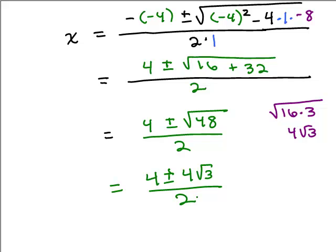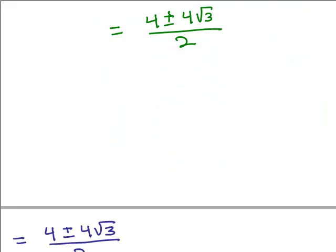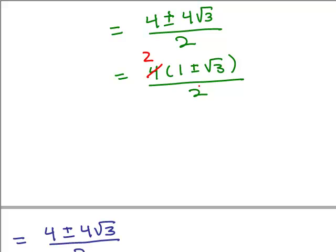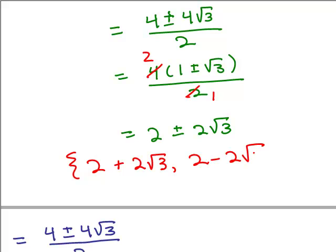Our next step is to simplify this fraction. To simplify fractions, you factor and cancel. Looking at the numerator, I can factor out a 4 and cancel with the 2 in the denominator. Using the distributive property: 2 times 1 is 2, plus or minus 2 times square root of 3 is 2 square roots of 3. That gives two solutions: 2 plus 2 square roots of 3, and 2 minus 2 square roots of 3.